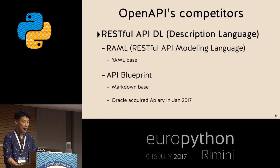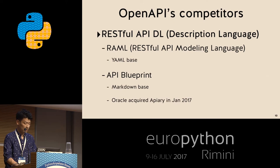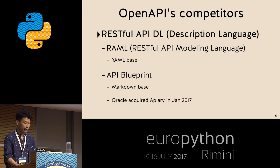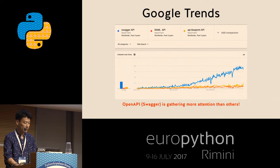There are some competitors of OpenAPI. These kinds of languages are categorized as RESTful API description languages. One is RAML — RESTful API Modeling Language — which is YAML-based. Another is API Blueprint, which is Markdown-based, and its developer Apiary was acquired by Oracle at the beginning of this year. There are many more tools available for OpenAPI than for those alternatives. Looking at Google Trends, OpenAPI — also known as Swagger — is gathering more attention than the others in the market, so it's a hot technology.